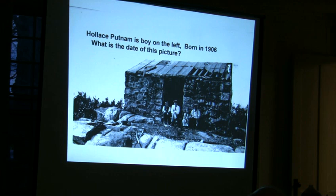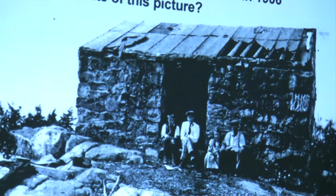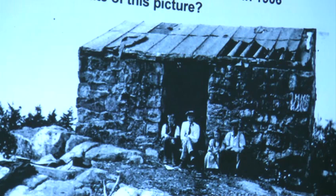This is Hollis Putnam, Hugh Putnam's father, born in 1906 — he's the boy on the left. If he's twelve years old, that would put the picture at about 1918. You can see the roof had deteriorated a lot; it looks like the wind took some of it off. Ralph Bissell said that sometime in the 1920s he spent the night in the stone hut. It rained like everything and he had to get way over in the corner — that was the only place the roof didn't leak — and he still got his feet kind of wet.